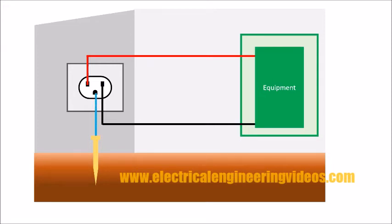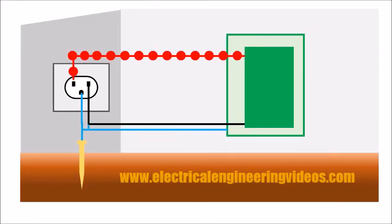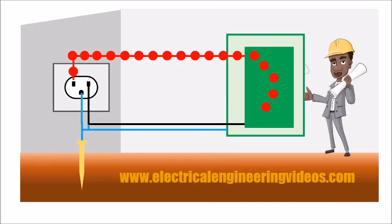The chassis of the equipment is also connected to the ground, and the neutral is also connected to the ground. A ground rod provides a low resistance path. In case of a fault or any short between HOT and the chassis, the current flows through the ground instead of electrocuting the user.